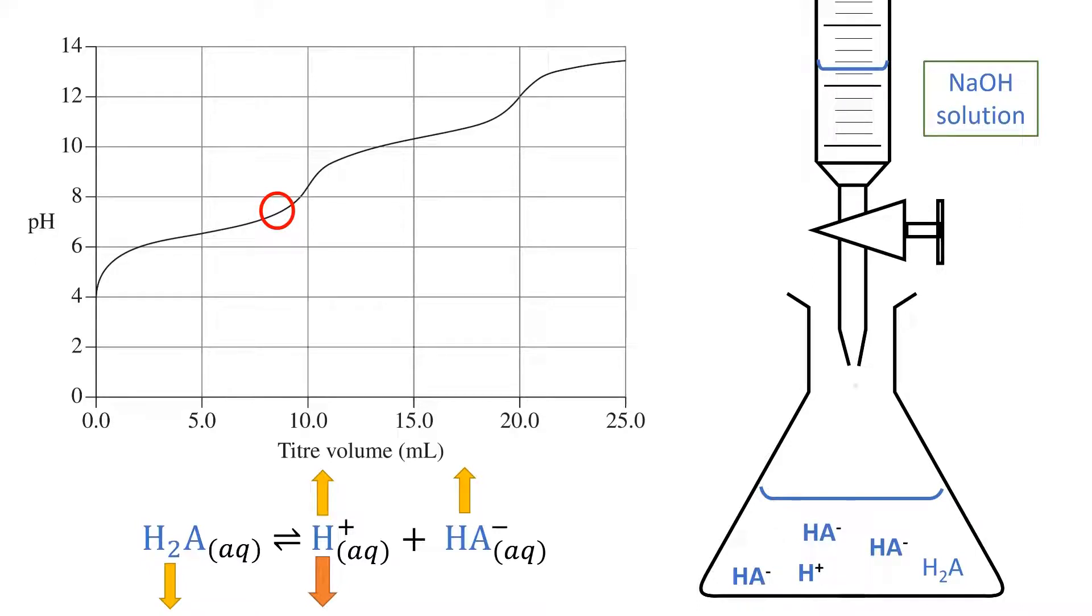There will then be a point when the last drop will cause the reaction to go to completion. The last H2A molecule will be used up. At this point, adding more sodium hydroxide causes large changes in the pH, and the titration curve will reach the equivalence point.